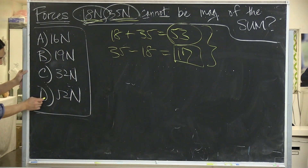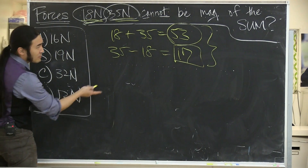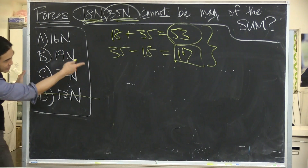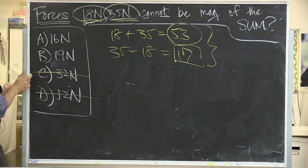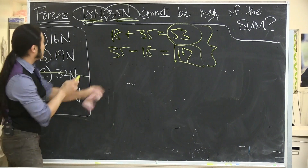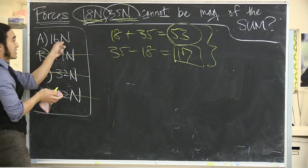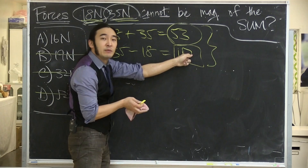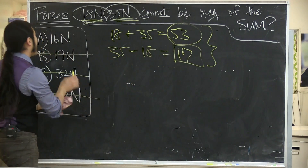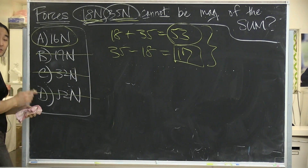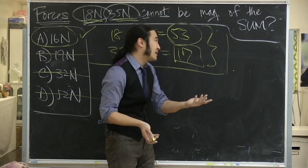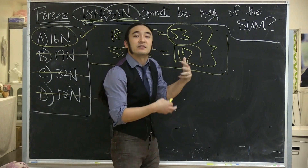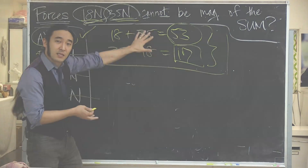Looking at the answer choices: 52 is within the range, so that's fine. 32 is in the range, it's good. 19 is close but still clean. But look at 16 — even in the worst case scenario you beat me by 17, so there's no way we could hit 16. The point of doing this problem, aside from getting the answer, is to get a window into what the MCAT test is really like.